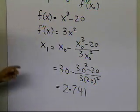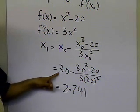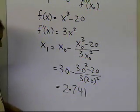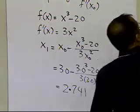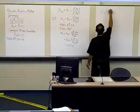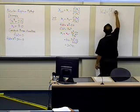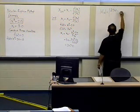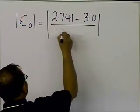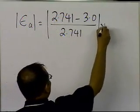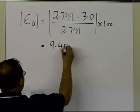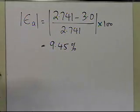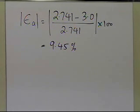Since I have a previous estimate, which was 3, and this is my new estimate, 2.741, I can calculate my absolute relative approximate error. That is the present approximation, 2.741, minus the previous approximation, which was 3 — my initial guess — divided by 2.741, which is my current approximation, times 100, and that number turns out to be 9.45 percent. So at the end of the first iteration, the absolute relative approximate error is 9.45 percent.